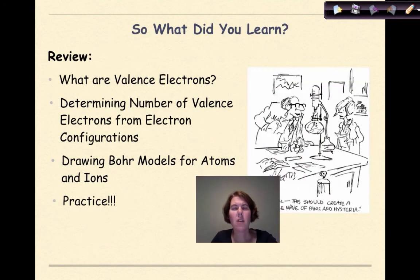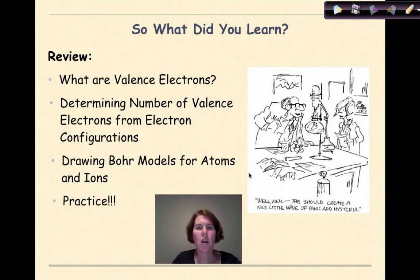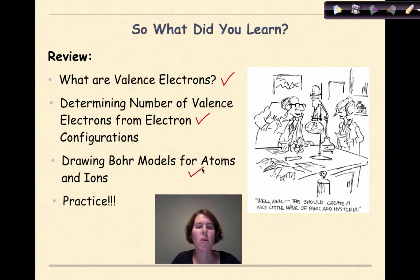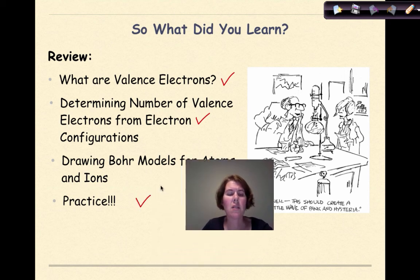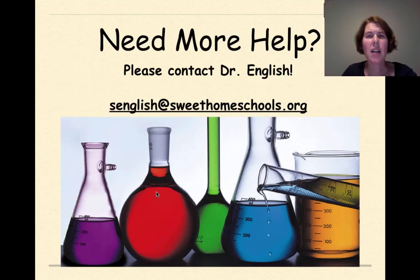So what did we learn in this tutorial? We went over the definition of a valence electron and what they do. We determined the number of valence electrons from electron configurations. We drew Bohr models for atoms and ions and identified valence electrons. And we did some practice at the end. Need more help? Feel free to contact me. Have a great day!